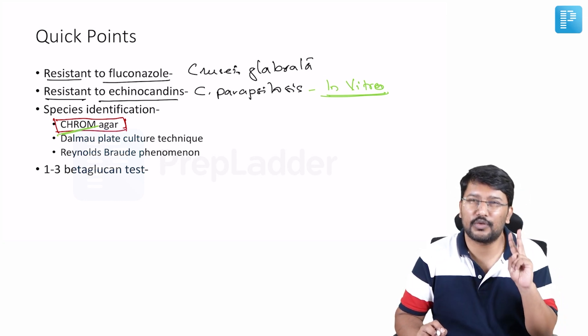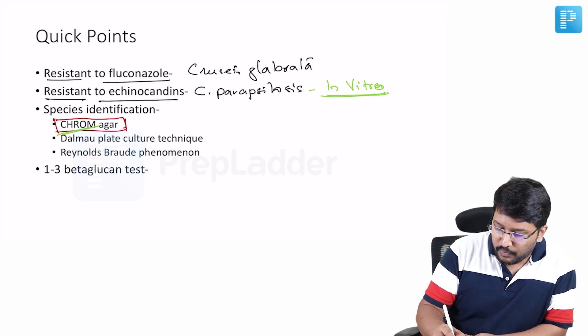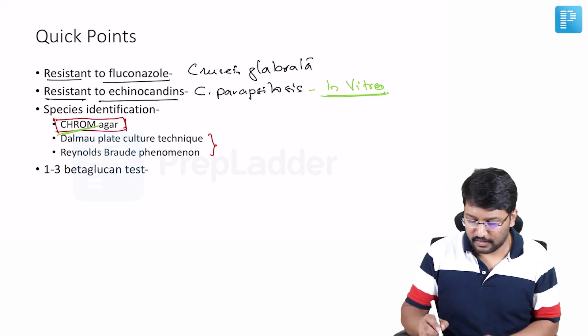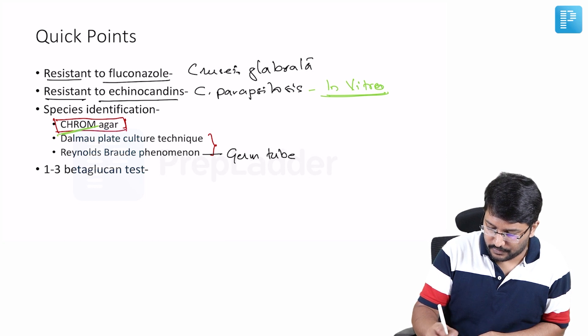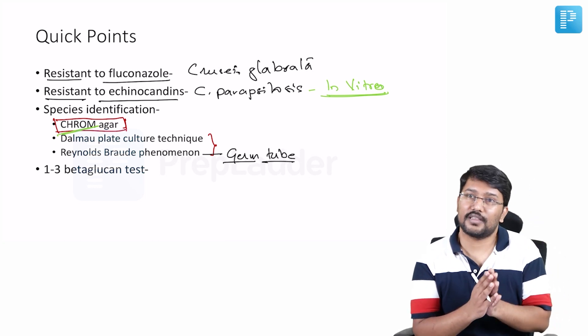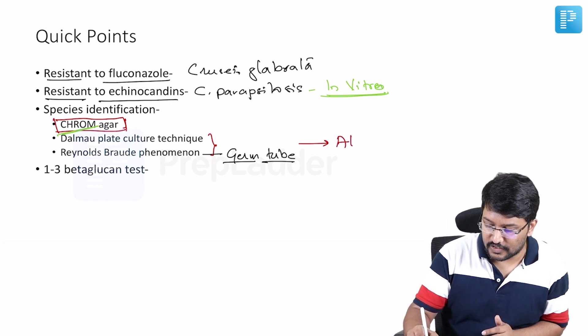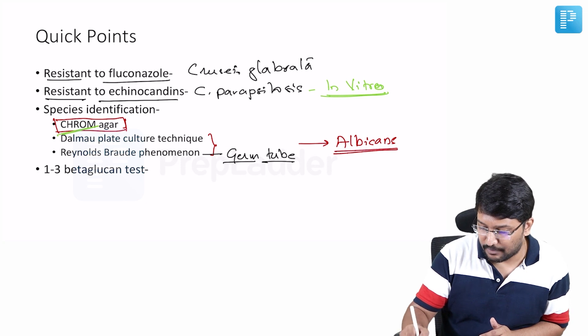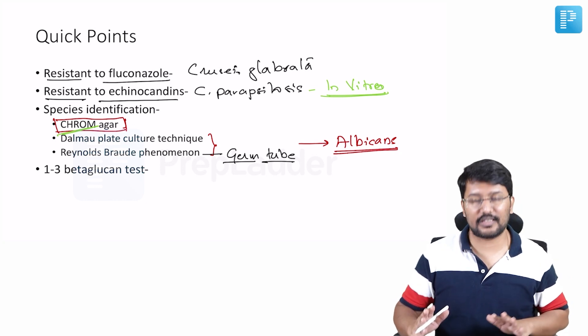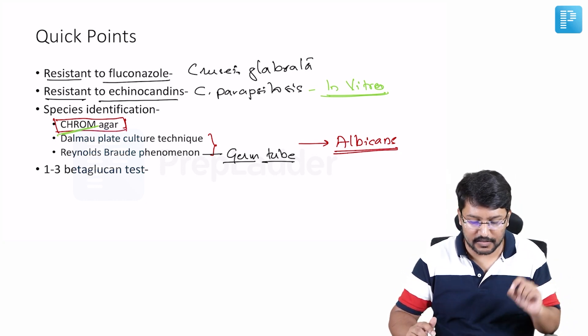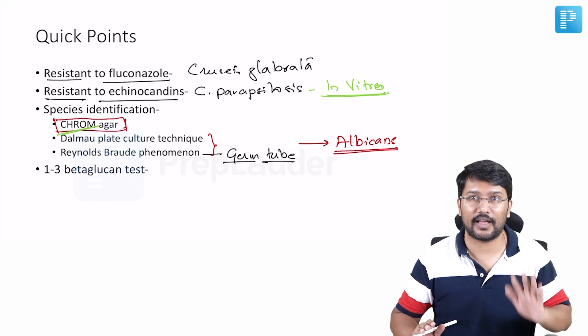Apart from that I want you to remember two specific names. I'm not going into the details of the microbiology but then Dalmau plate culture technique and Reynolds-Braude phenomenon. This is a test done on the germ tube. So these two tests usually suggest, these two occurrences usually suggest albicans species. They usually suggest albicans species. So remember this point. If they say that there is Reynolds-Braude phenomenon positive then it is suggestive of albicans. Similarly, if there is growth documented on Dalmau plate culture technique where you see chlamydospores, then it is suggestive of albicans.